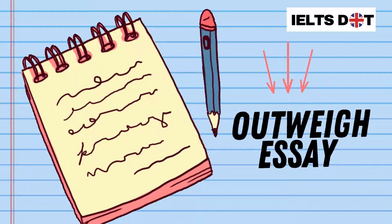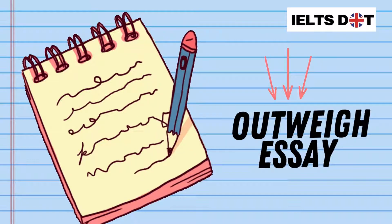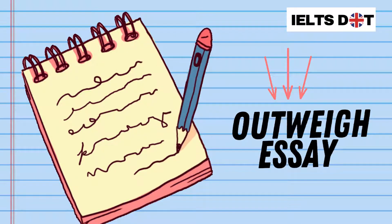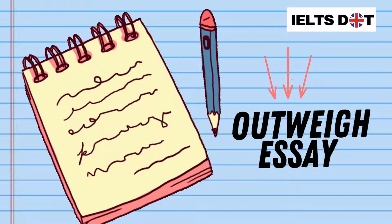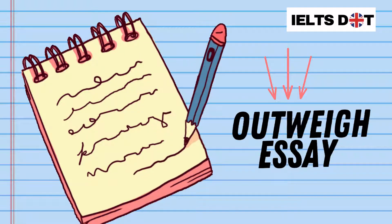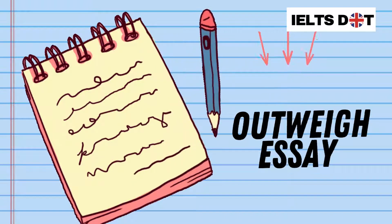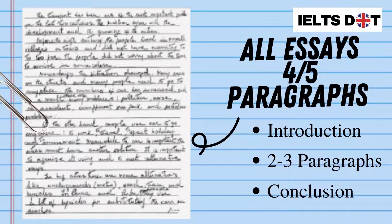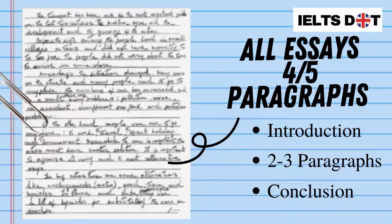Now in this video, I'm going to give you an overview of this outweigh essay. The reason why I felt I needed to make this series is because many candidates believe that the structure and requirements of an IELTS essay is relatively straightforward. All essays have four or five paragraphs — an introduction, two or three body paragraphs, and then a conclusion. However, there are some small but very important differences between them depending on the type of essay.